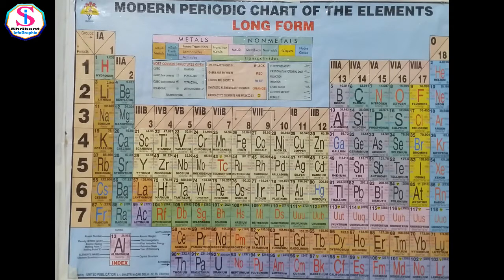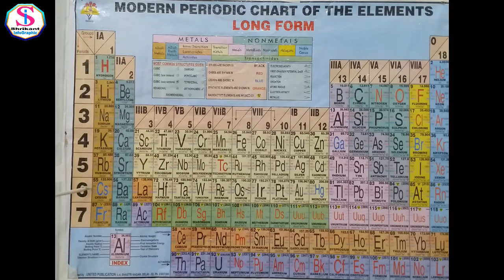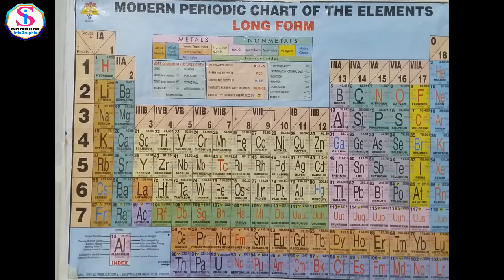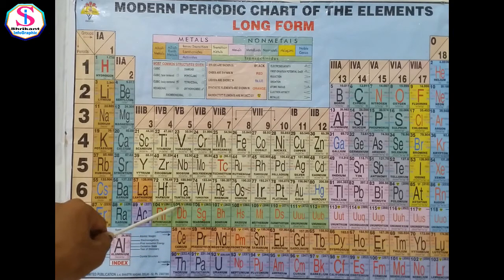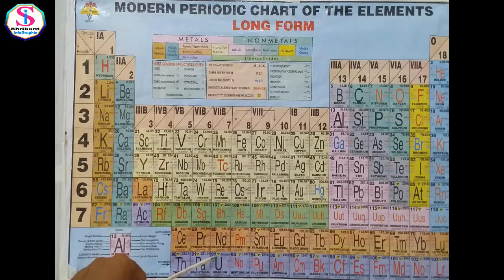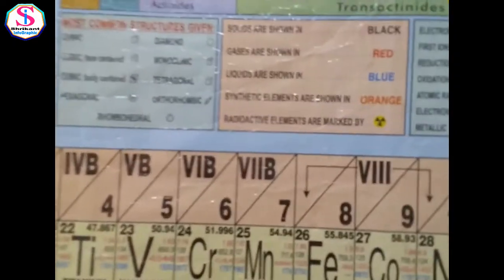Regarding physical states and color coding: solids are shown in black, gases in red, and liquids in blue — cesium, francium, gallium, mercury, and bromine are liquids. Synthetic elements made in the laboratory are shown in orange. Radioactive elements such as uranium are marked with a radioactive symbol.